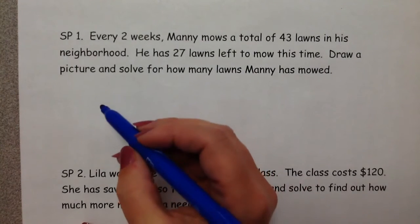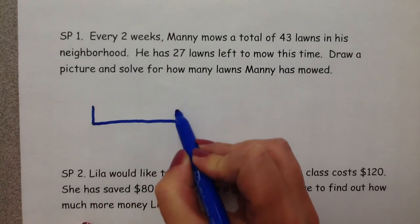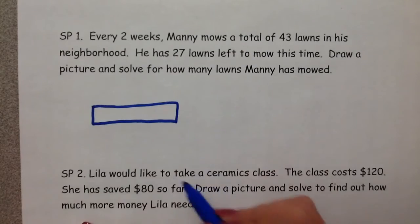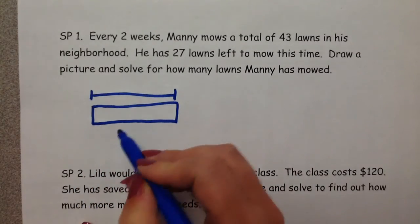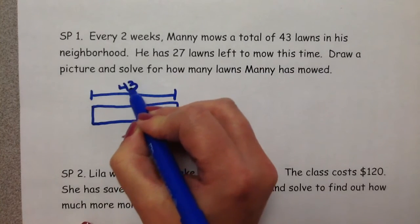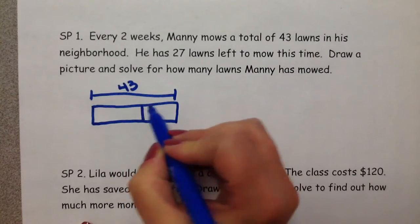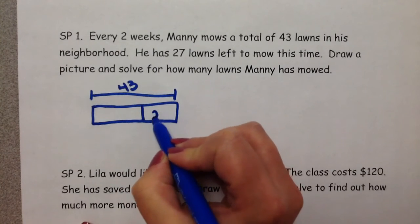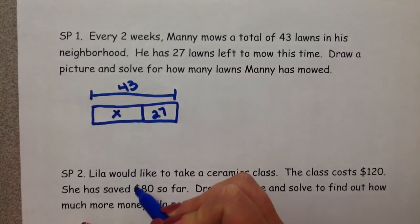Well, the hard part to me was learning the pictures. The format they do looks like a big rectangle. The total amount goes up here at the top, and in this case, the total amount is 43 lawns. And we're breaking that up into what we know, that he has 27 left to mow, and what we don't know, which is how many he's already mowed.